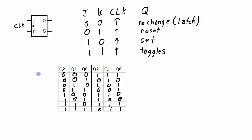We can use the rules of the JK flip-flop for each one of the transitions to determine what the J value and the K value should be to cause that transition. For example, in this first transition, this is the current state and this is the next state. So when we're transitioning from a 0 to a 7, Q2 goes from a 0 to a 1, and Q1 goes from a 0 to a 1.